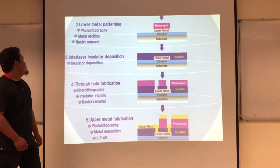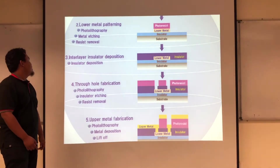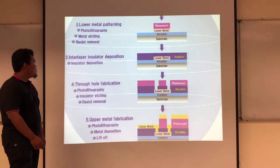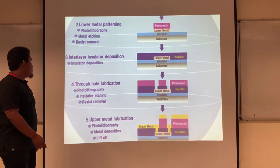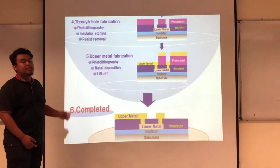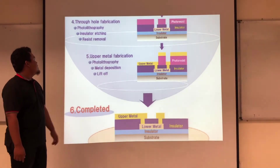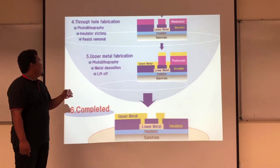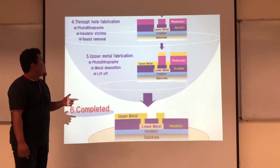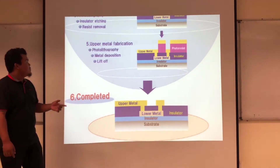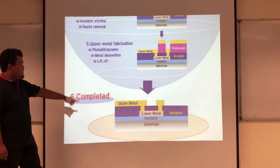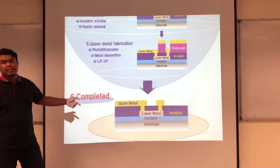Third is the inter-layer insulation deposition, which consists of insulator deposition. Fourth is through-hole fabrication, which involves photolithography, insulator etching, and resist removal. The fifth is upper metal fabrication, which consists of photolithography, metal deposition, and lift-off. And lastly is the complete total of the process.